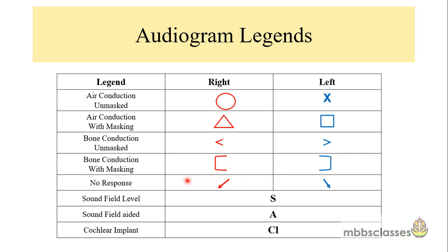In an audiogram there are different types of symbols, which we call audiogram legends. These audiogram legends are the various symbols used to represent data for air and bone conduction for the right and the left ear. Always remember: right and left are written on audiograms, and there is also color coding — all legends of the right ear are red and legends of the left ear are blue.